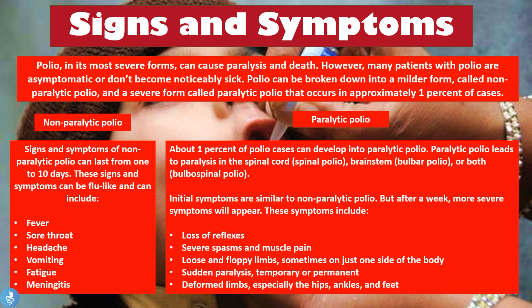About 1% of polio cases develop into paralytic polio, which leads to paralysis in the spinal cord (spinal polio), the brainstem (bulbar polio), or both (bulbospinal polio). Initial symptoms are similar to non-paralytic polio — fever, sore throat, headache, vomiting, fatigue, and meningitis — but after about a week, more severe symptoms appear: loss of reflexes, severe spasms and muscle pain, loose and floppy limbs sometimes on just one side, sudden paralysis (temporary or permanent), and deformed limbs especially in the hips, ankles, and feet.